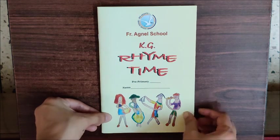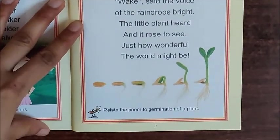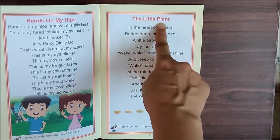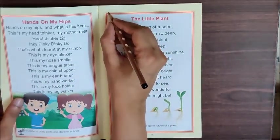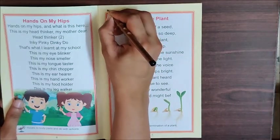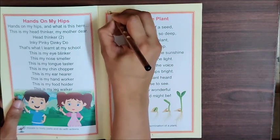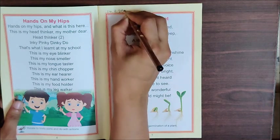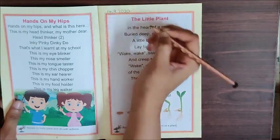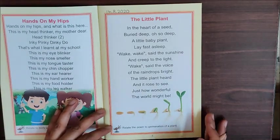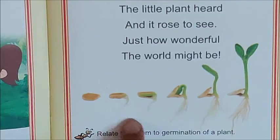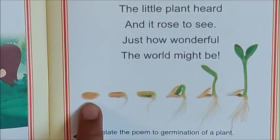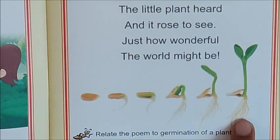Children, open page 5 of your book Rhyme Time. See, I have opened page number 5. On this page we have our rhyme, 'The Little Plant.' Write down the date here on the red line. Today is August 14 — 14.8.2020. We have done this rhyme today. And children, look — these pictures show the stages of germination. It shows how a little seed grows into a baby plant.